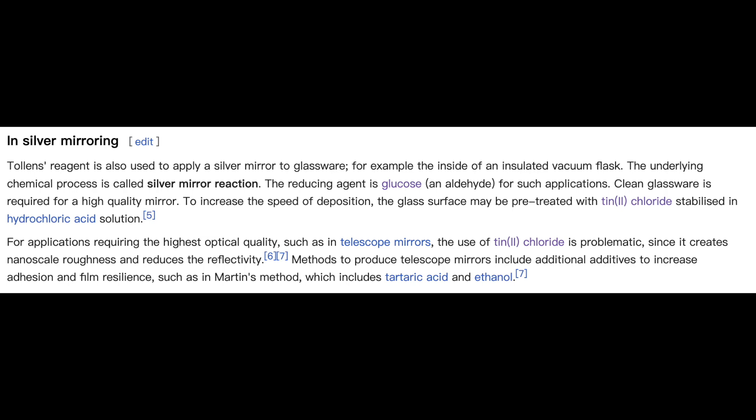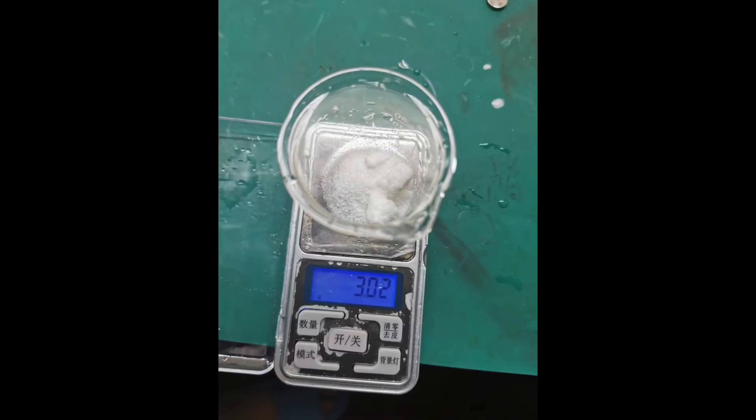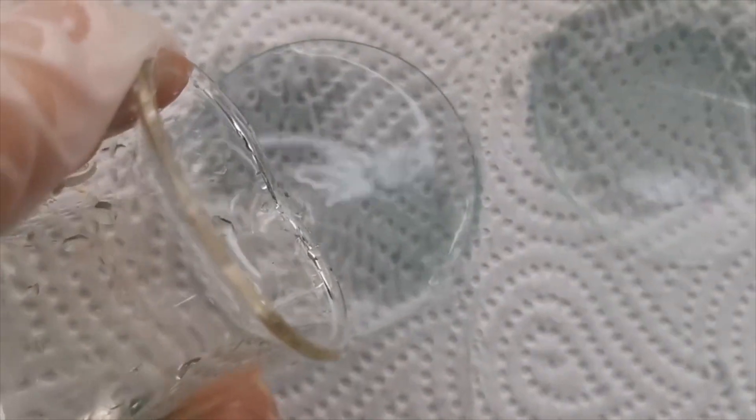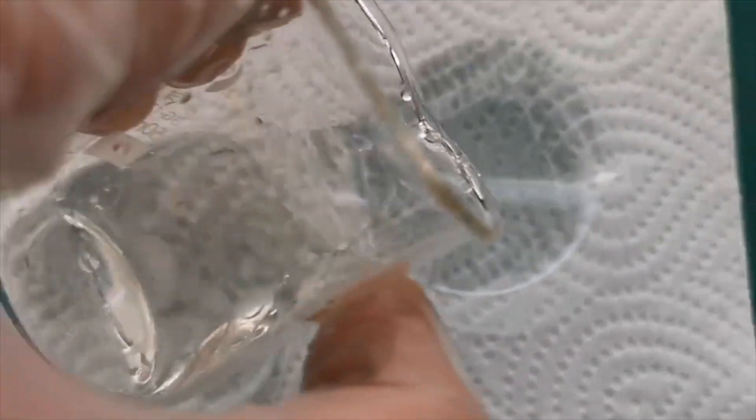I measured out 3 grams of glucose monohydrate, and dissolved it in about 30 milliliters of water. I poured about 10 milliliters of the Tollens' reagent in both of the watch glasses, and poured about 10 milliliters of the glucose solution in both of them.